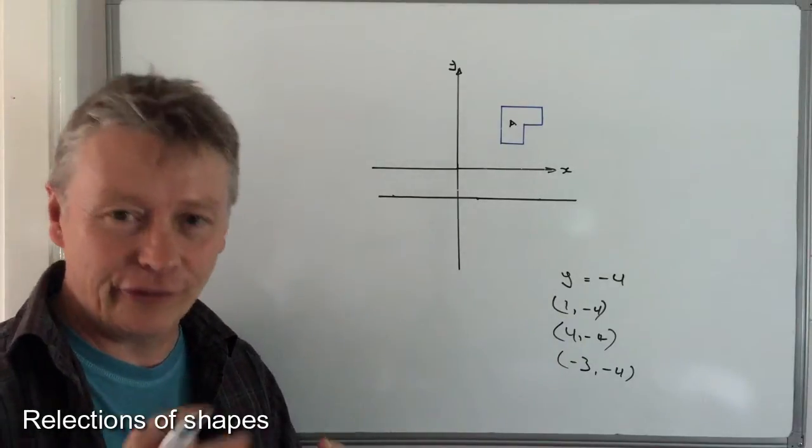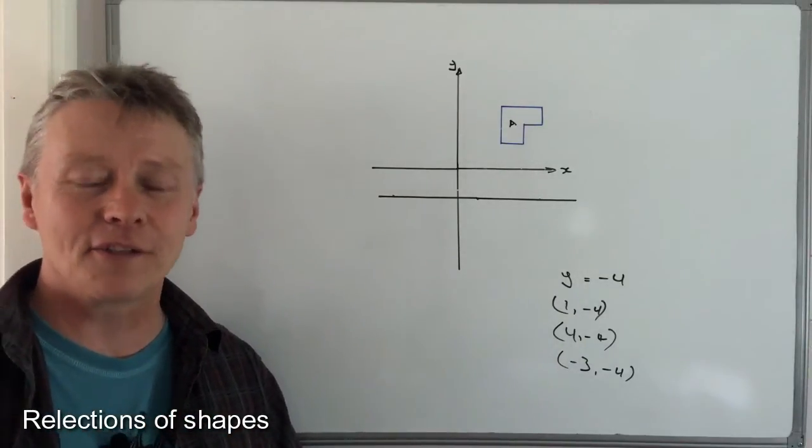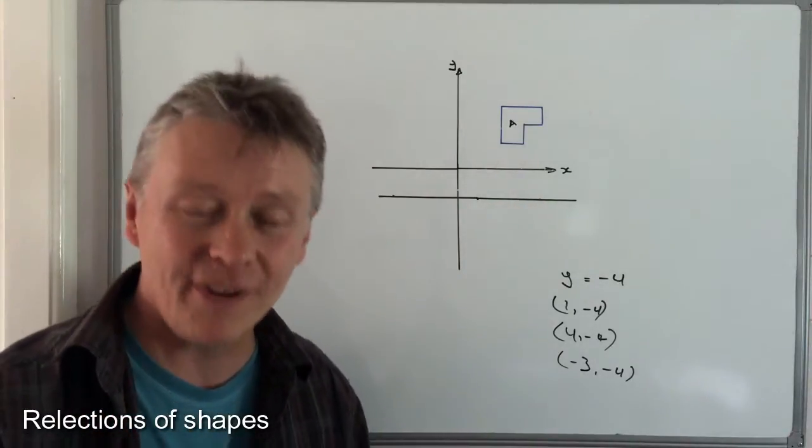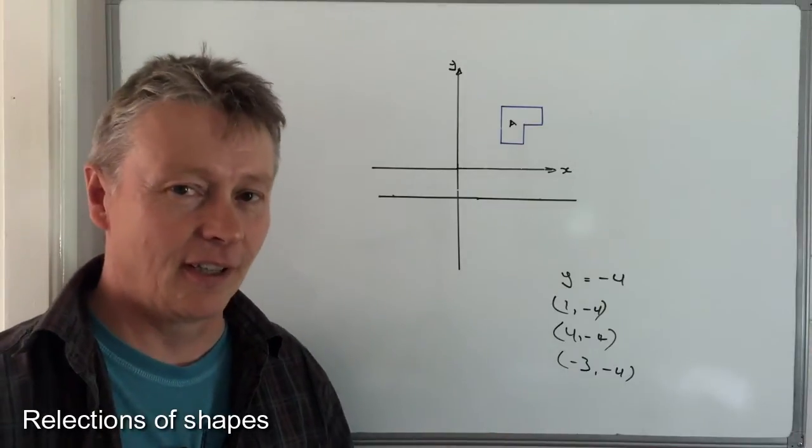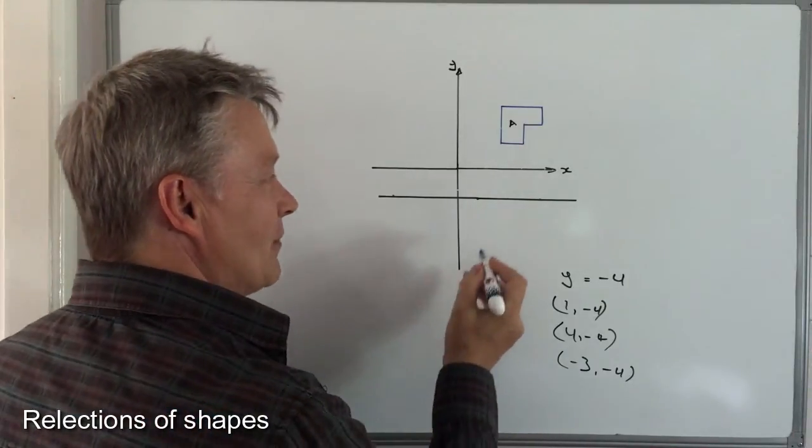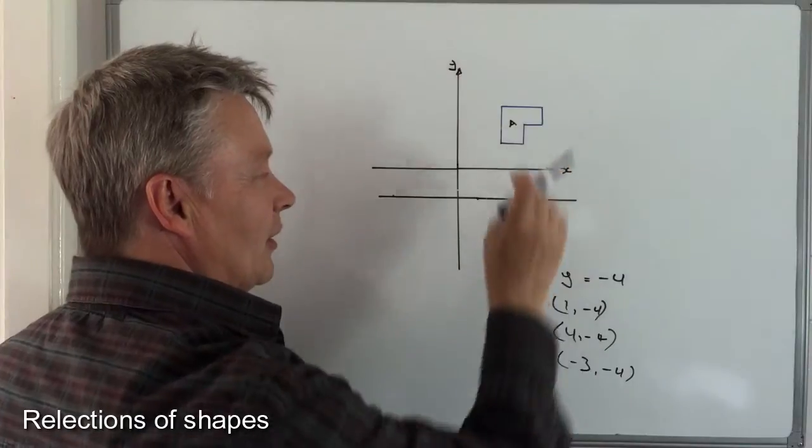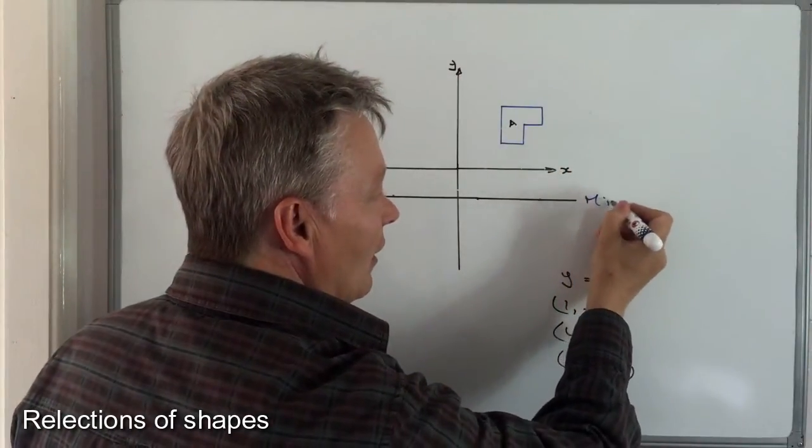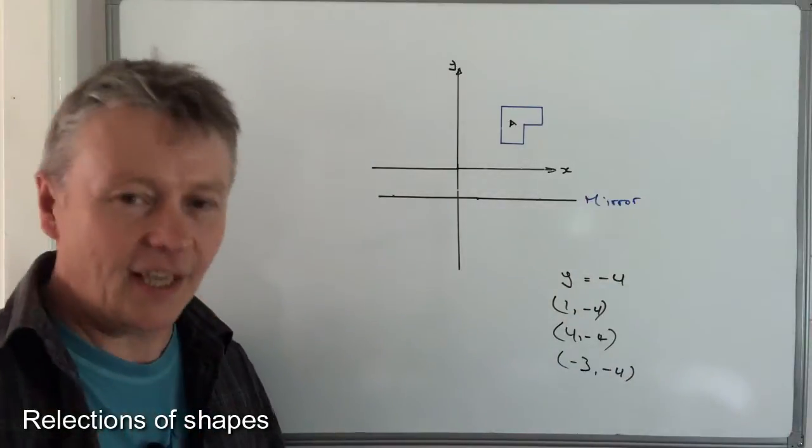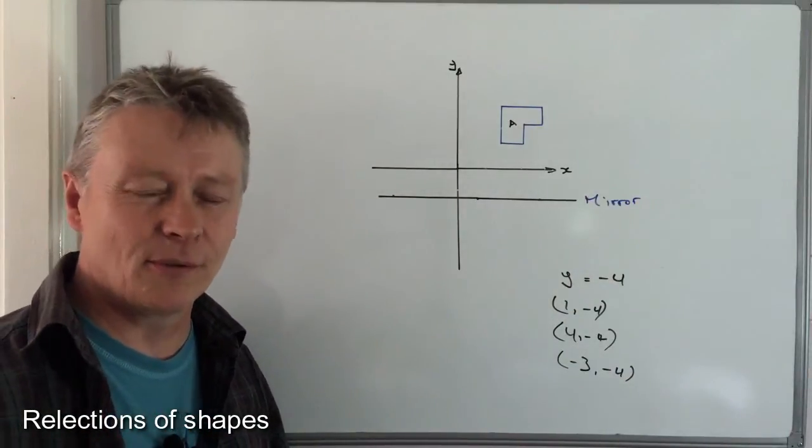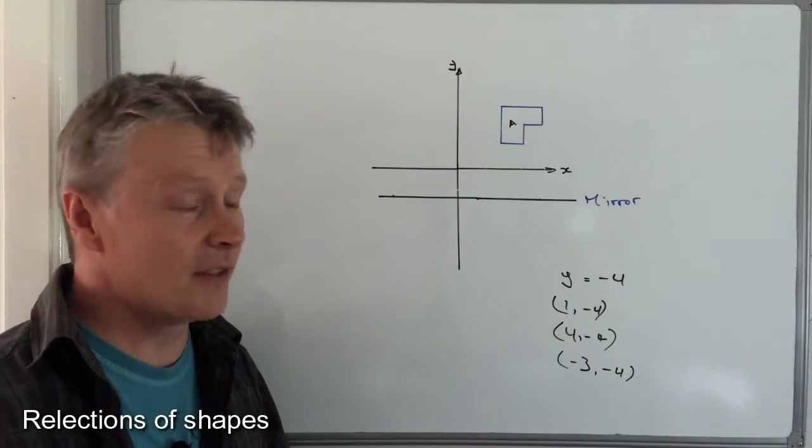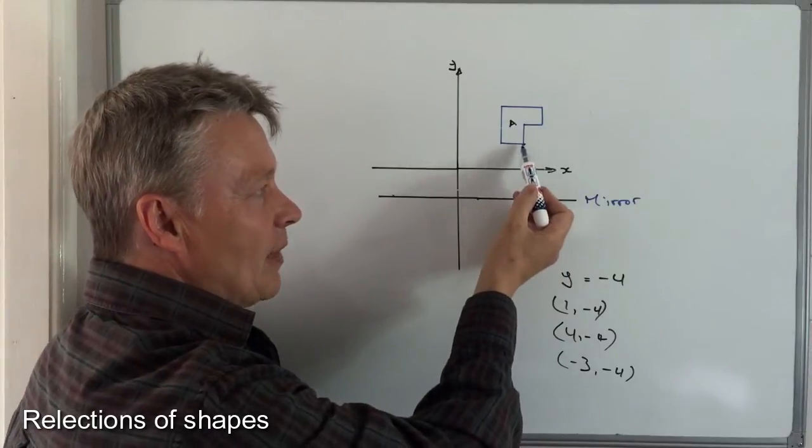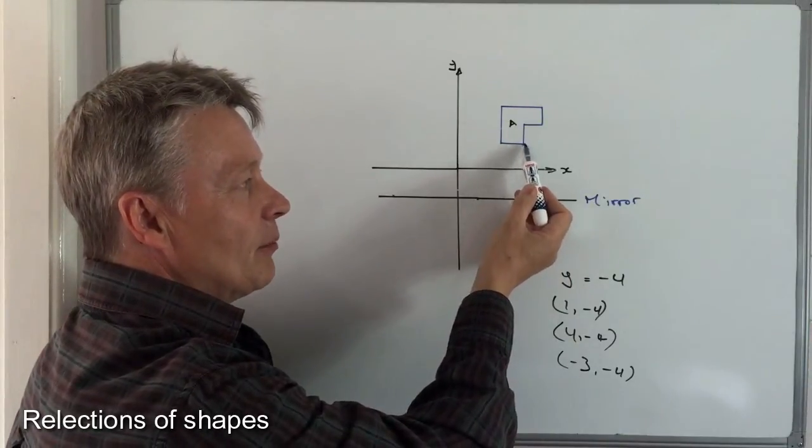The way to reflect accurately is to make sure that all of the points of the shape are perpendicular to the mirror line. What I mean by that is, it's tempting just to kind of look at that and imagine what it's going to be like if this is the mirror. Well, that can work but sometimes it's not always that accurate. So the best way of doing it is to just simply pick a point and work out how many spaces it is between the point and the mirror line.